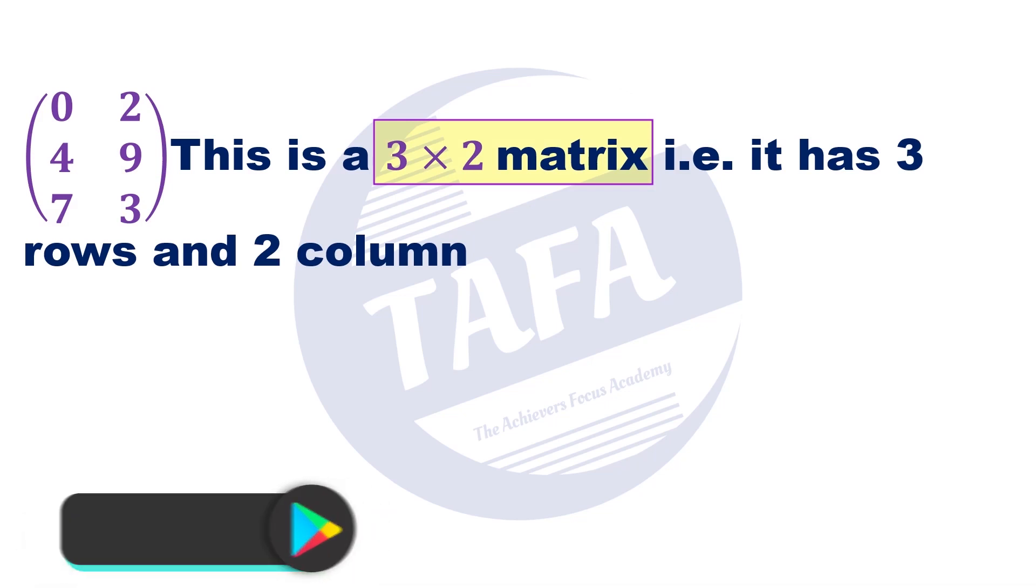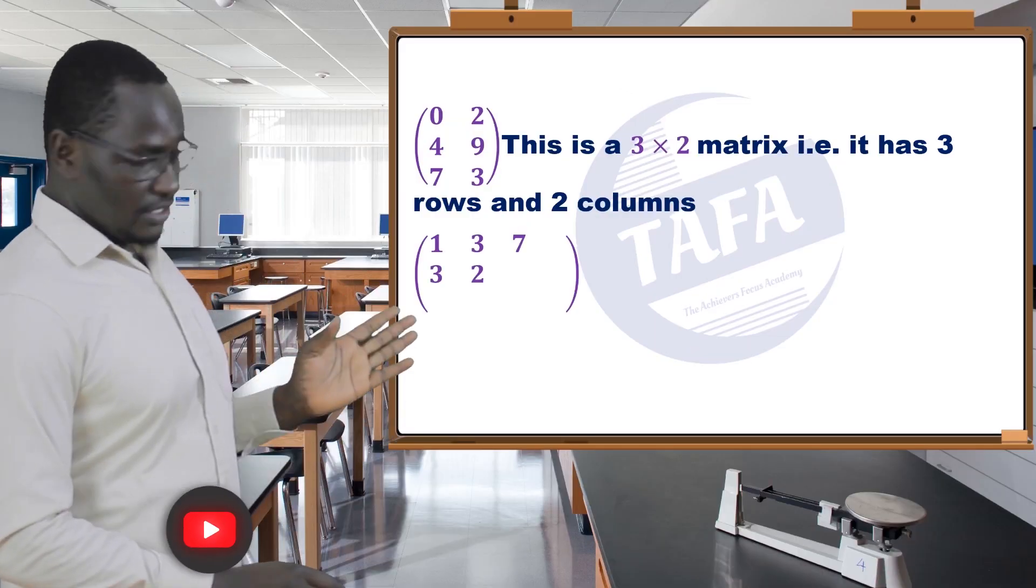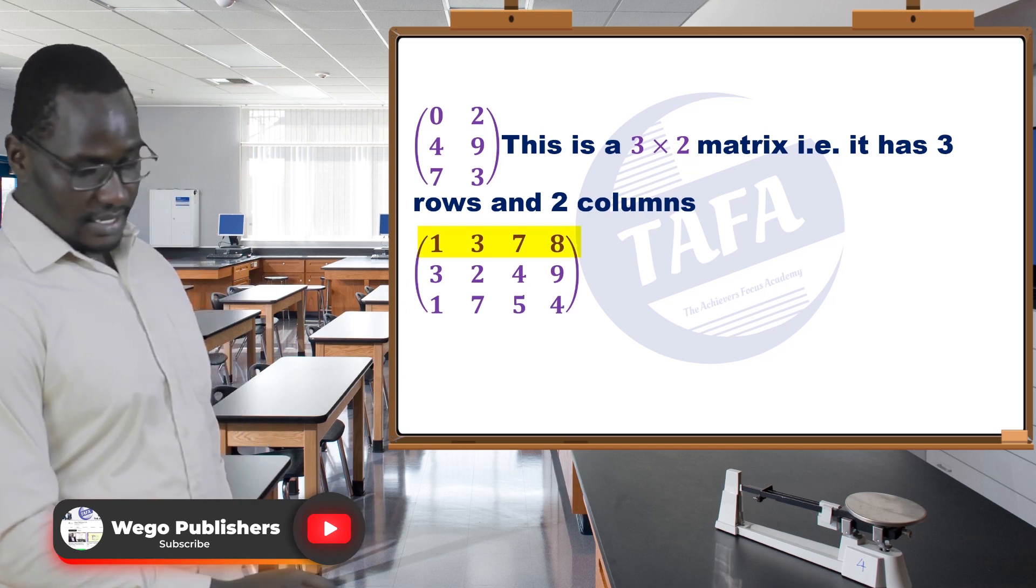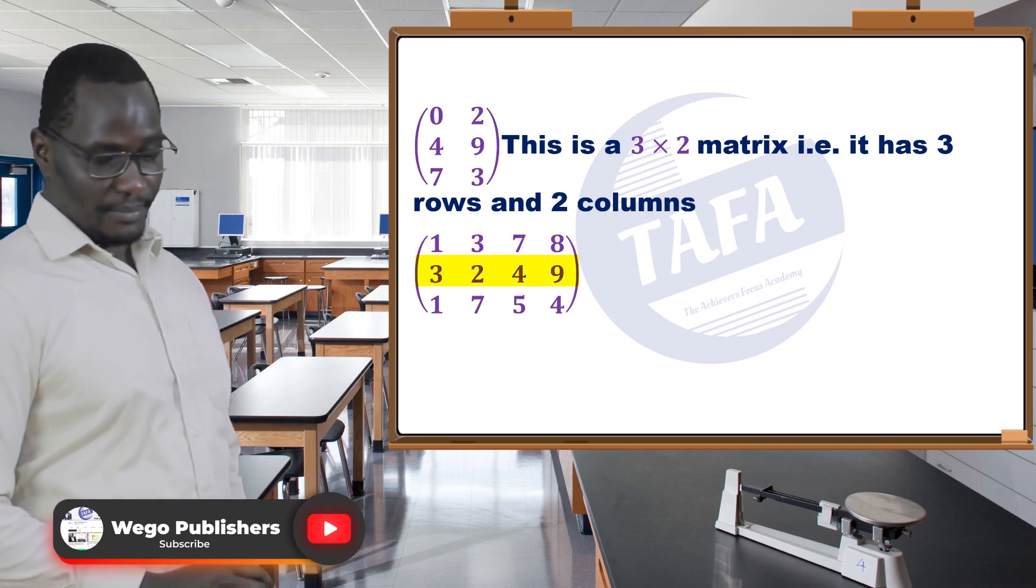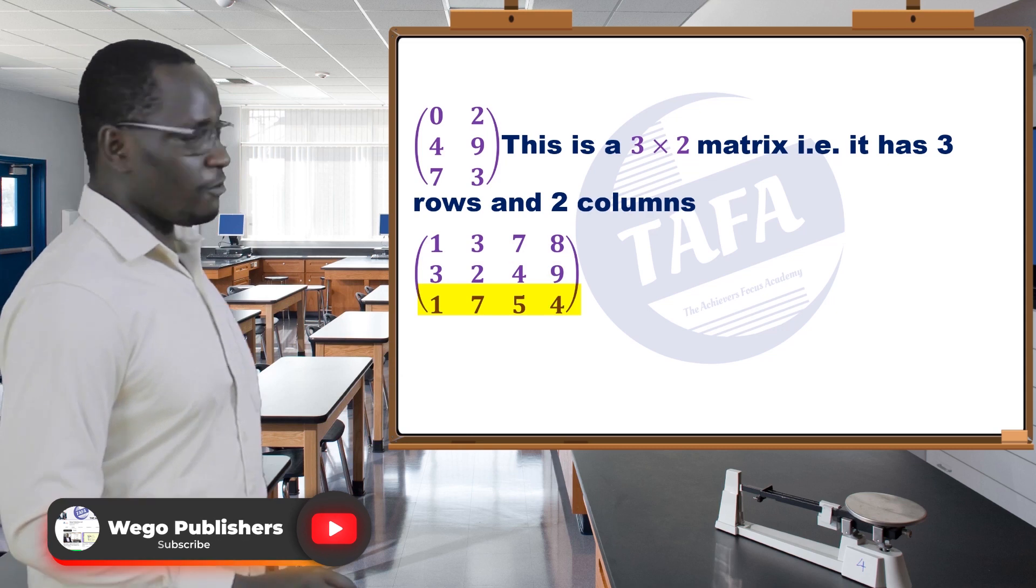Then there is this matrix: 1, 3, 7, 8, 3, 2, 4, 9, 1, 7, 5, 4.